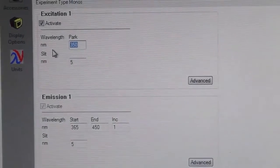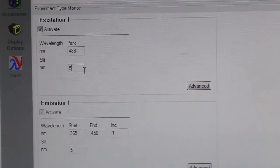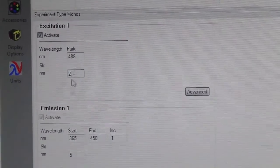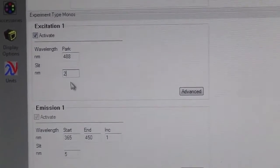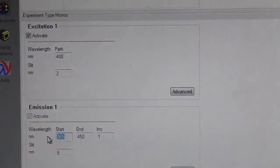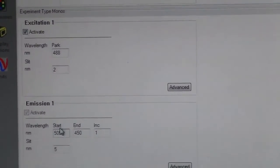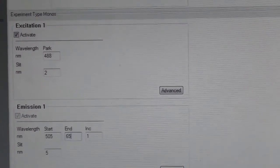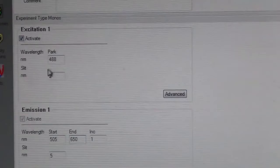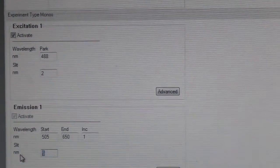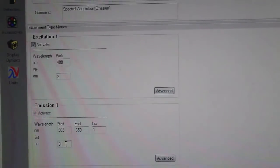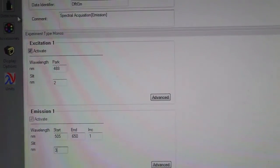Alexa Fluor 488 excites at 488 nanometer wavelength. We change the excitation slit to 2 nanometers. This excitation slit depends on how much fluorophore concentration you have in your sample. We collect the fluorescence emission from around 505 nanometers to almost 650 nanometers. This should span the range of emission for both the donor and the acceptor. We keep the emission slit width a little higher compared to the excitation slit width. That gives better sensitivity.